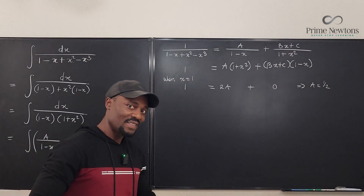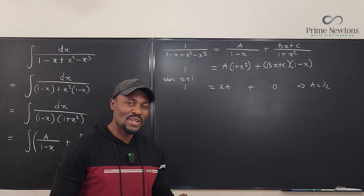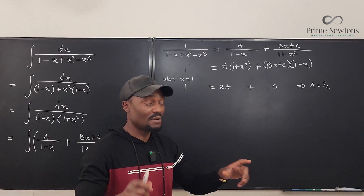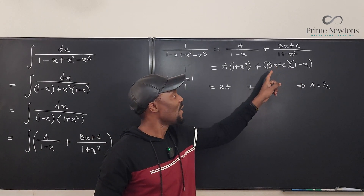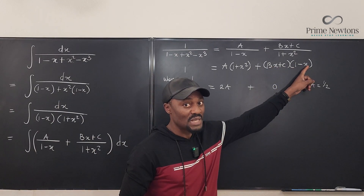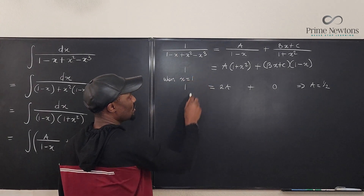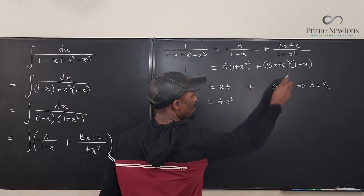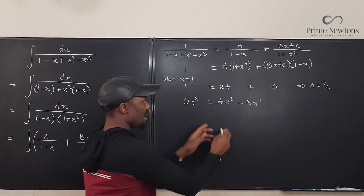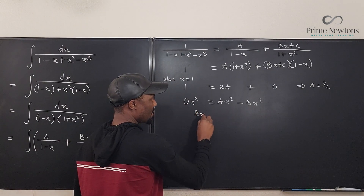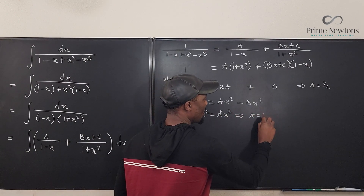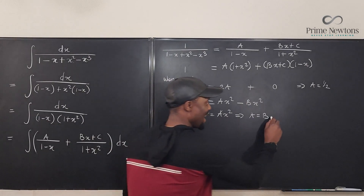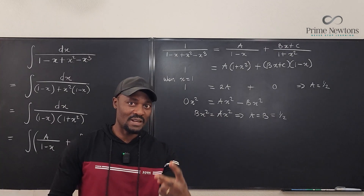Next, look at the x² coefficients. The only x² term from the right side comes from A·x² and from Bx times (-x) = -Bx². There is no x² term on the left side, so 0 = A - B, which implies A = B. Since we already found A = 1/2, that means B = 1/2 as well.